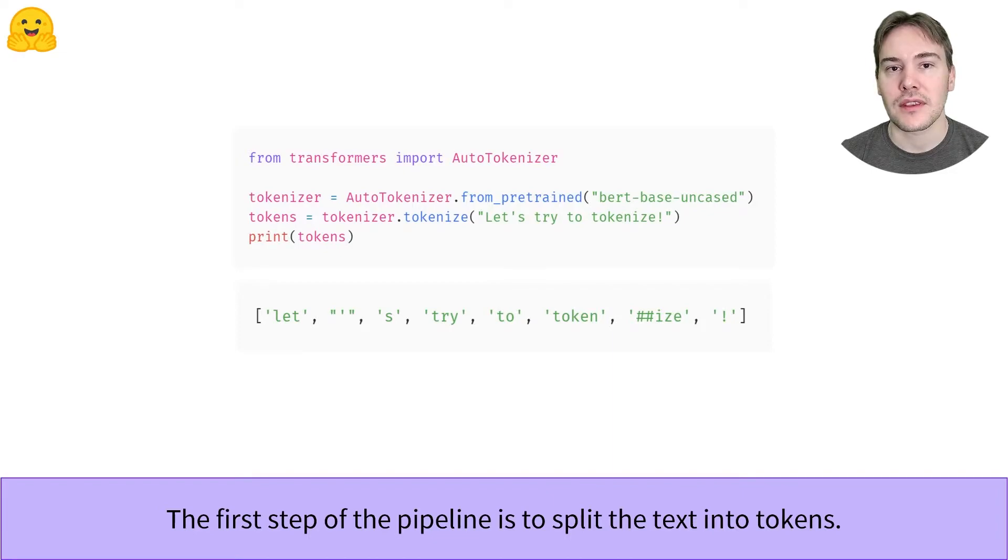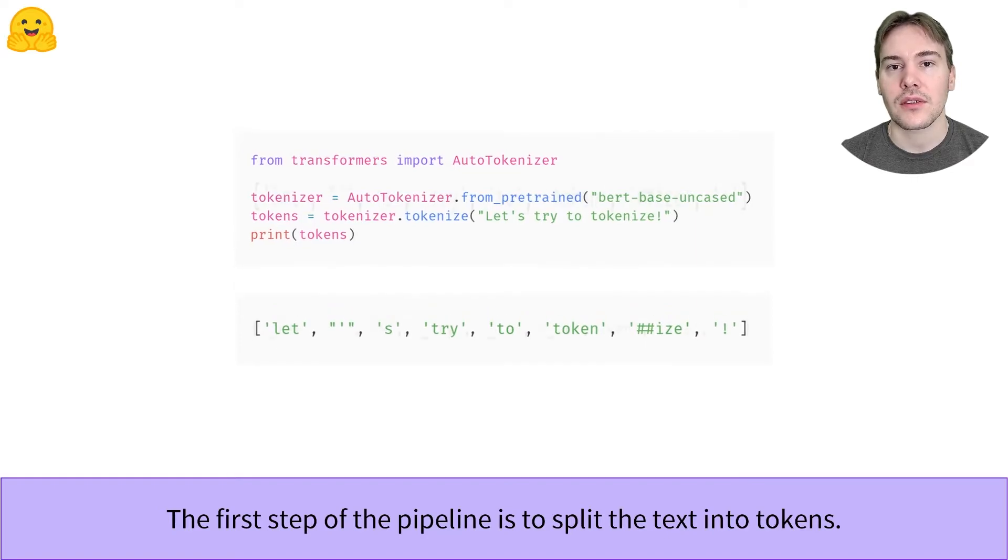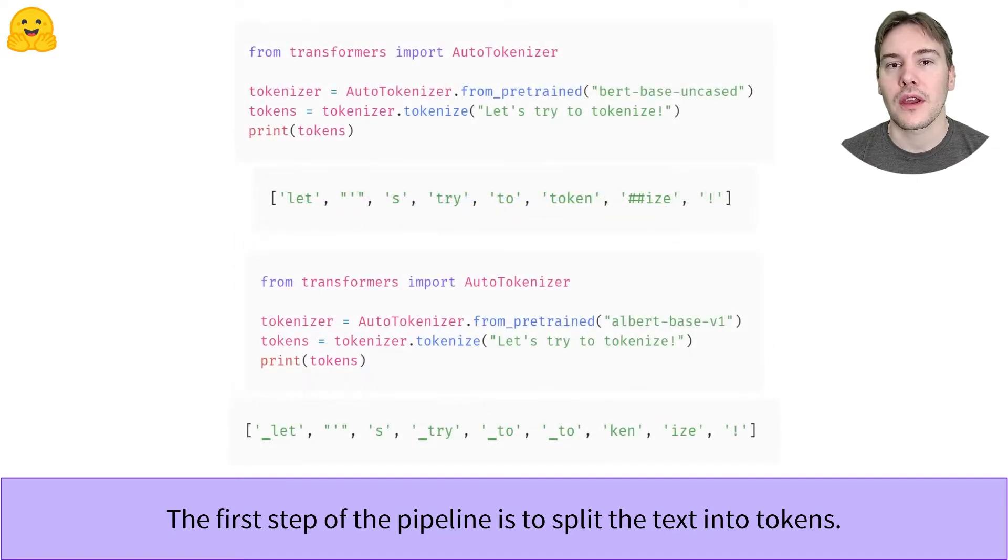The hash hash prefix we see in front of eyes is a convention used by BERT to indicate this token is not the beginning of the word. Other tokenizers may use different conventions, however. For instance, Albert tokenizers will add a long underscore in front of all the tokens that had a space before them, which is a convention shared by all sentence-based tokenizers.